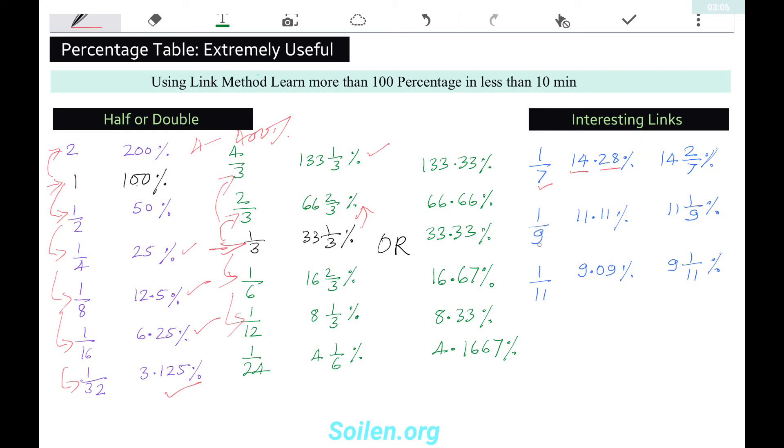There is an interesting link between 9 and 11. In 1/9, we have 11.11, and in 1/11, we have 9.09. So both we can remember very easily. 1/9 is 11.11 percent or 11 and 1/9 percent. And 1/11 is 9.09 percent or 9 and 1/11 percent.